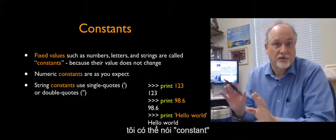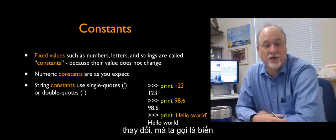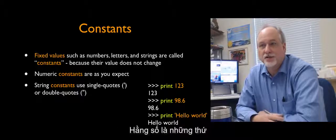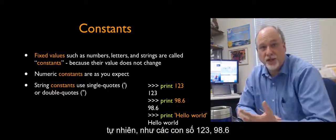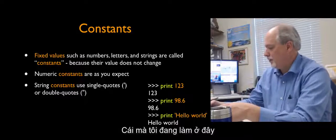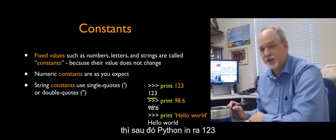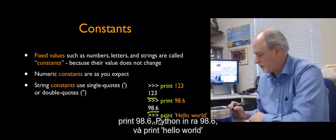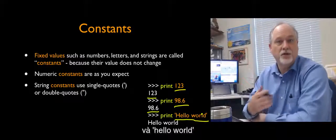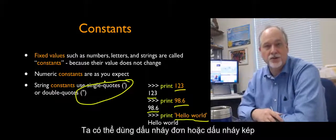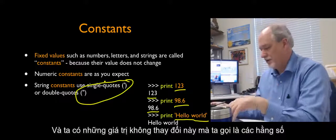Constants — some of this is terminology so I can say the word 'constant' without you freaking out. A constant, contrasted with something that changes (a variable), is a fixed value. Constants are natural things like numbers: 123, 98.6, or 'hello world'. In the Python interpreter — you can tell by the chevron prompt — 'print 123' gives 123, 'print 98.6' gives 98.6, and 'print "hello world"' gives hello world. We can use either single or double quotes to make strings. These non-varying values are called constants.